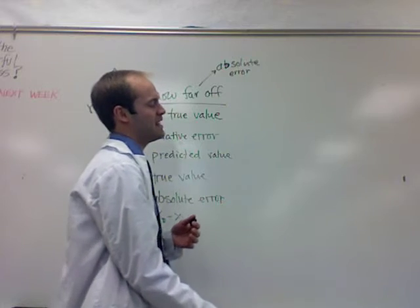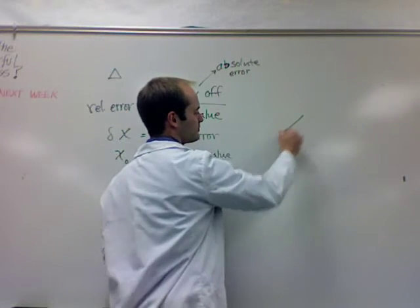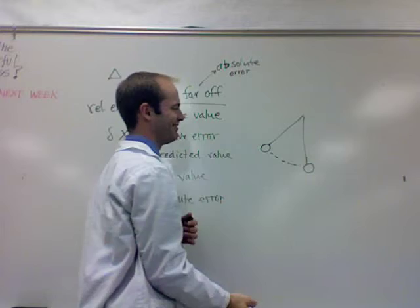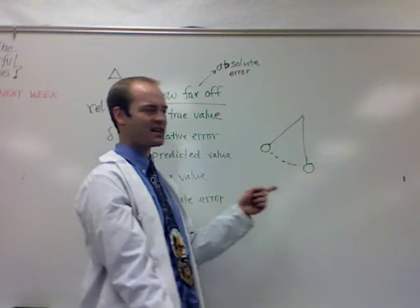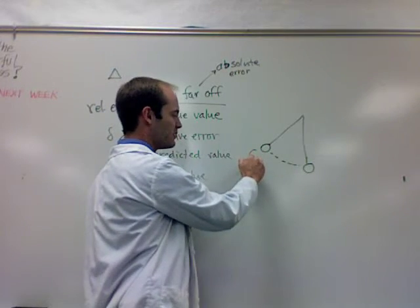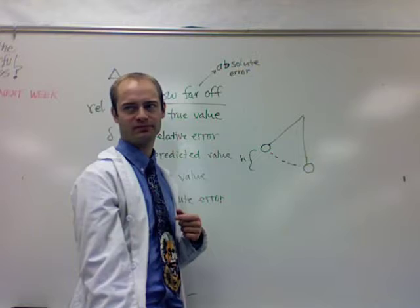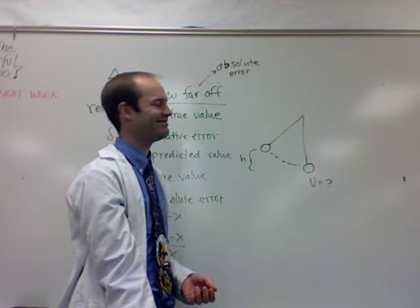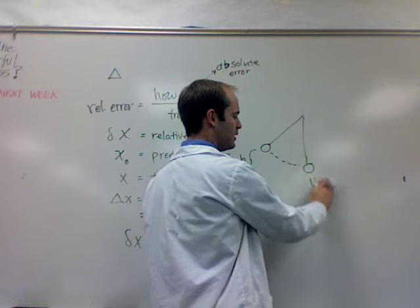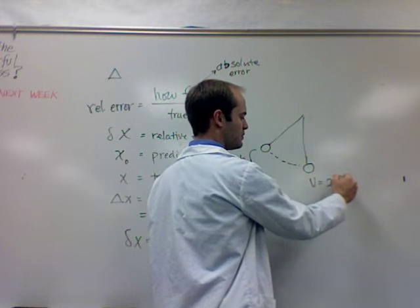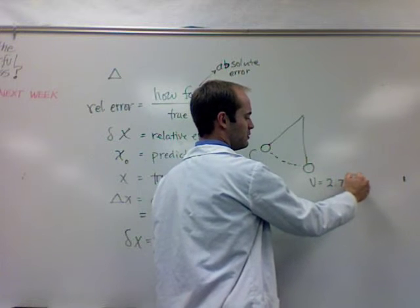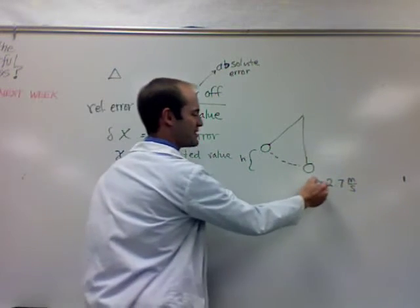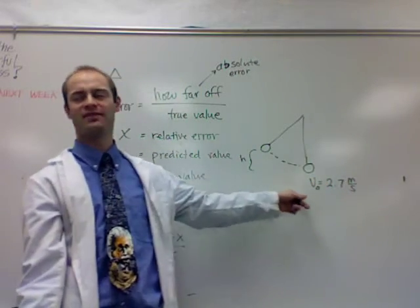Let's say we have a pendulum and it's going to swing down to here. And I ask you to predict how fast it's going to be going down here if I release it from this height h. So my question is, I want you to predict a value for the speed at the bottom. And let's say you come up with a predicted value of 2.7 meters per second. Remember, our predicted value we denote with a little zero right here. So I'll put the zero right there. This is our predicted value.